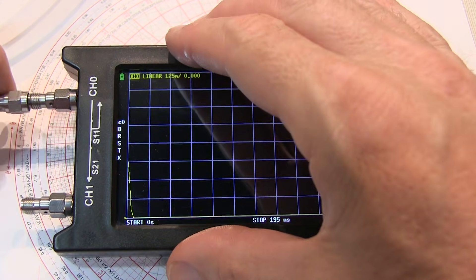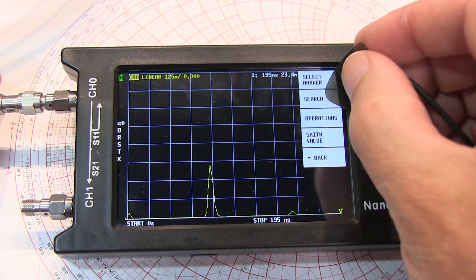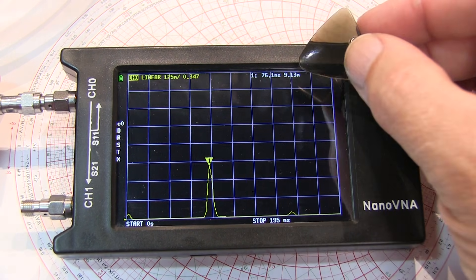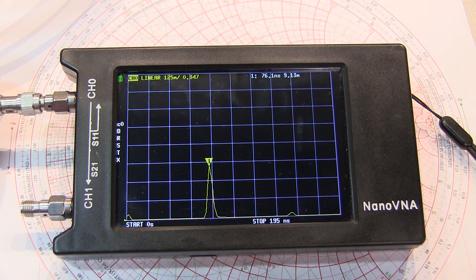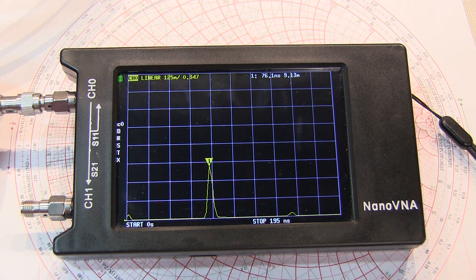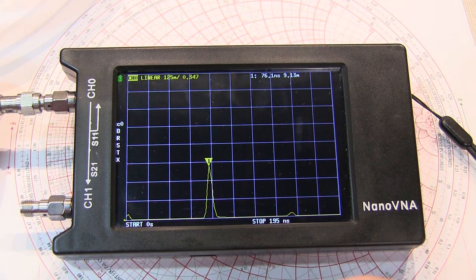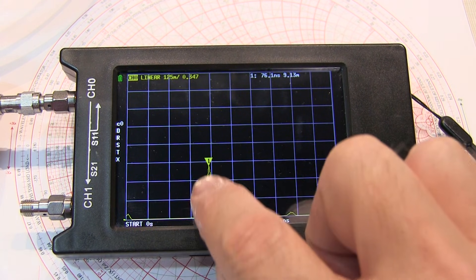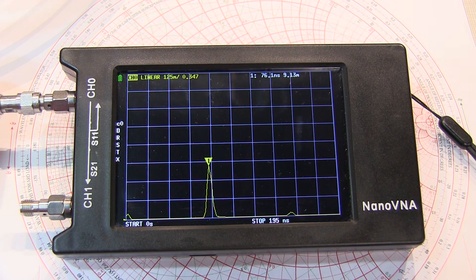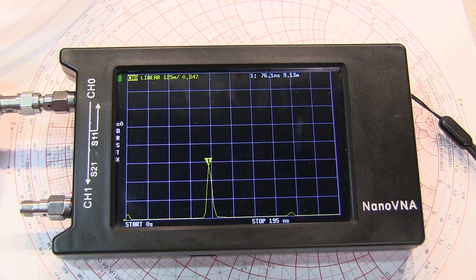Now we can hook up our unknown coax. We can use the marker search feature to find that peak value, and we can see the peak is occurring at 9.13 meters. So this coil of coax is approximately 9.13 meters in length. Now, of course, if the coax had a short circuit or a break somewhere, the first peak would indicate where that fault is. But in this case, the coax is good, so we're seeing the end at 9.13 meters.